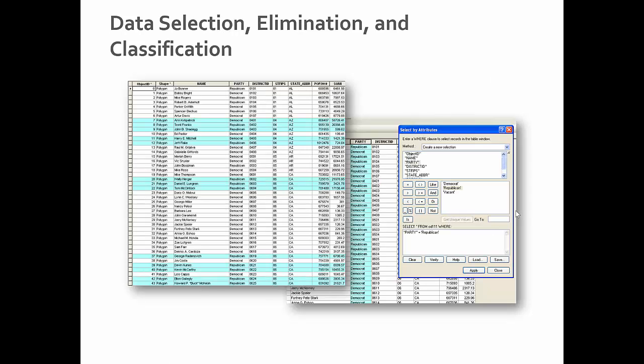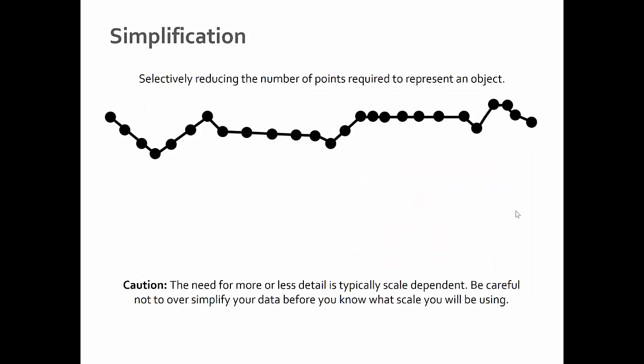One type of generalization that is obvious is data selection, elimination, and classification — this is data model generalization. Essentially you're eliminating data that might be too detailed for what you're trying to communicate. This deals with querying certain data and eliminating it before you even start to visualize it. But there are a lot of geometric and graphic types of generalization that are really useful, and we're going to review those ones right now.